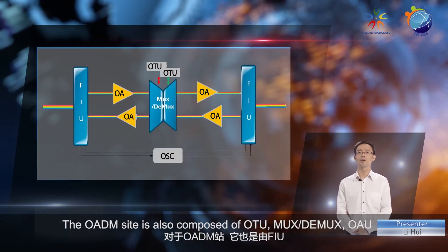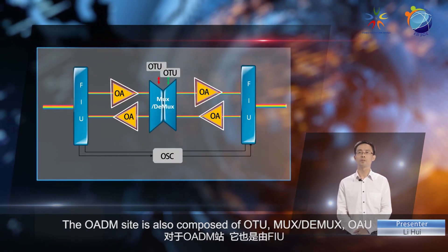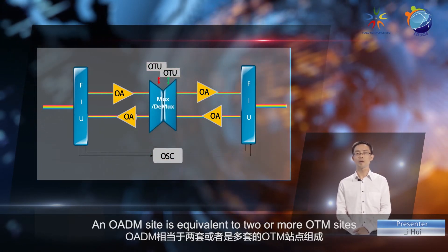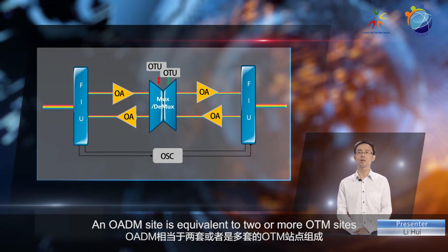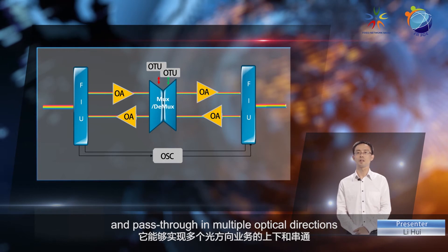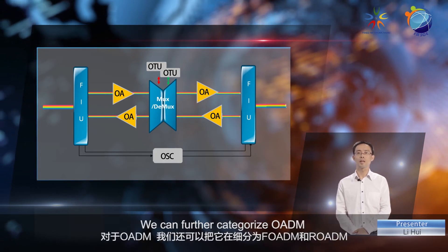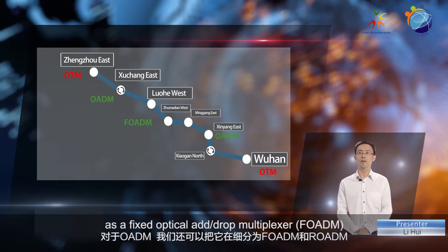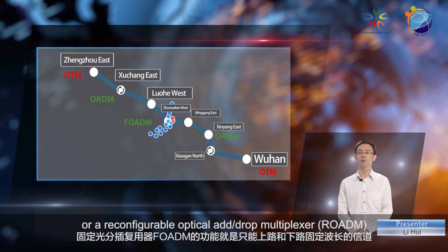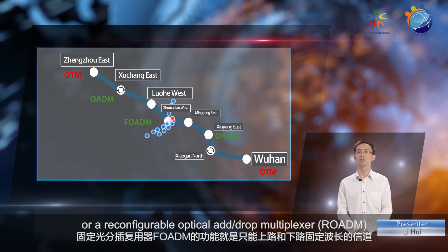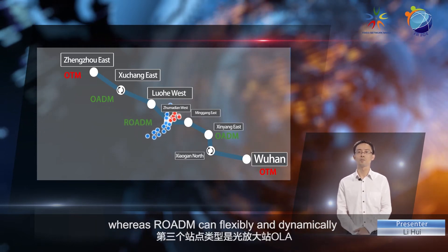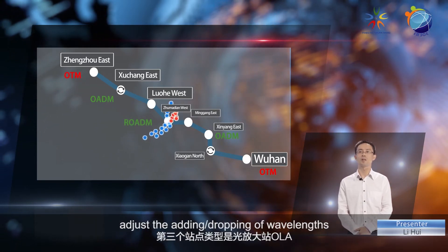The OADM site is also composed of OTU, MUX, DMUX, OAU, optical supervisory, and FIU units. An OADM site is equivalent to two or more OTM sites and can implement service adding, dropping, and pass-through in multiple optical directions. We can further categorize OADM as a fixed optical add/drop multiplexer (FOADM) or a reconfigurable optical add/drop multiplexer (ROADM). FOADM allows only the adding or dropping of fixed wavelengths, whereas ROADM can flexibly and dynamically adjust the adding or dropping of wavelengths.